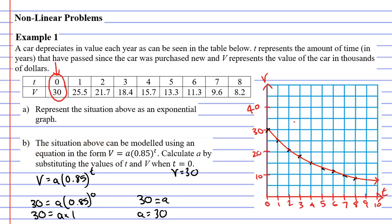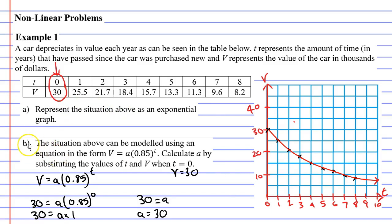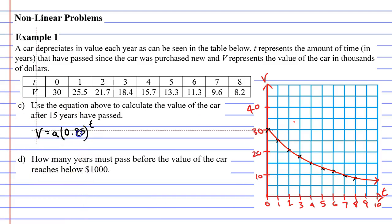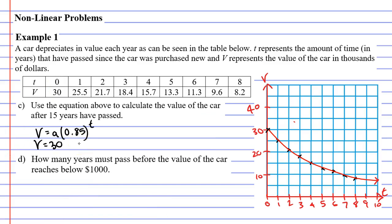That's the answer to Question B — A equals 30. Let's now move on to Question C. It says: use the equation above to calculate the value of the car after 15 years have passed. The equation from Question B is V equals A times 0.85 to the power of T, and since A equals 30, we update it to V equals 30 times 0.85 to the power of T. Since T equals 15, we substitute that in.